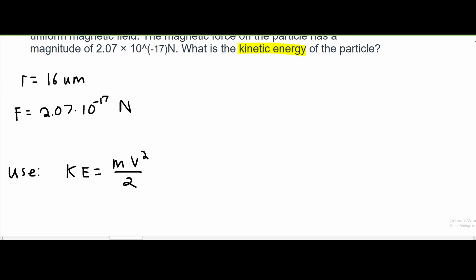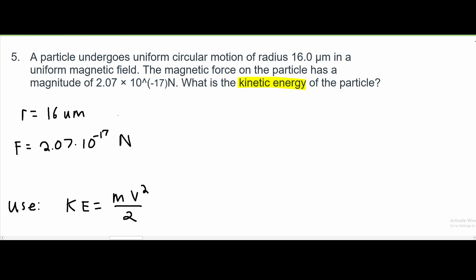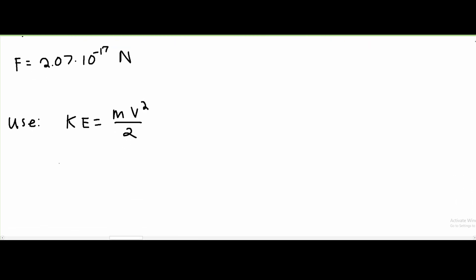However, we're not given velocity, nor are we given mass, and we don't know what particle it is. So we're going to have to also use force. The formula for force is mass times velocity squared over r.